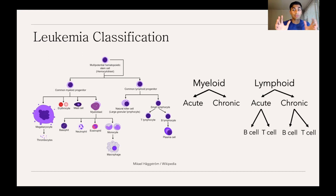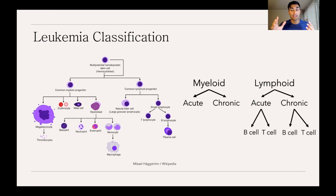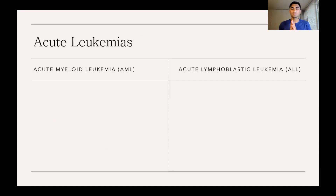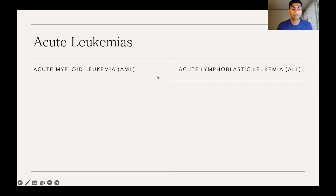Now we know what leukemia is, how blood cells develop through hematopoiesis, and we have a framework for classifying the different types. Now we'll get into the specific subtypes. We're going to start with the acute leukemias — those that develop rapidly with more severe symptoms — specifically the acute myeloid leukemias, sometimes abbreviated AML, which affect the myeloid side of the blood cell family tree.